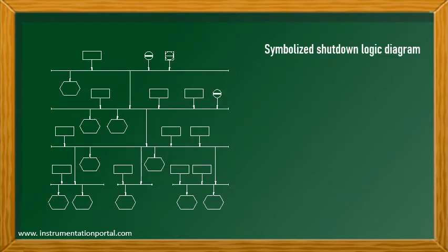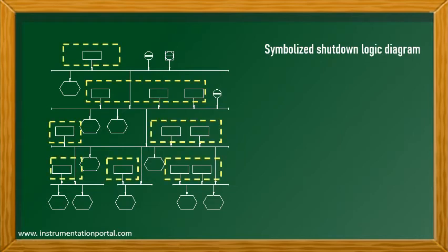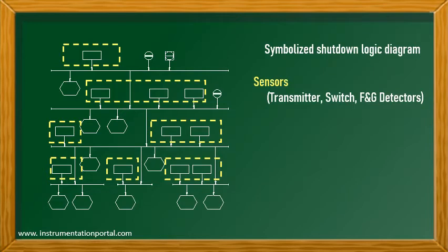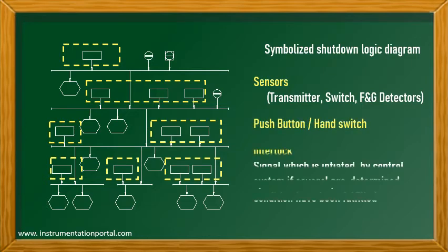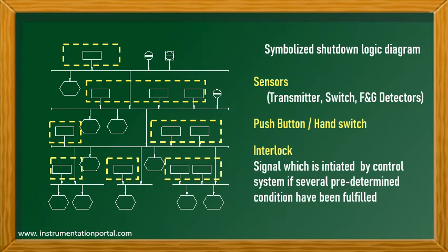This is a simplified shutdown logic diagram. It looks like a tree diagram. The rectangle is a symbol for the input, or a predetermined condition that is considered to be unsafe. This could be sensors such as transmitters, switches, or fire and gas detectors that detect abnormal conditions, push buttons or hand switches, or interlock and logic input from the system — a signal which is initiated by the control system when several predetermined conditions have been fulfilled.